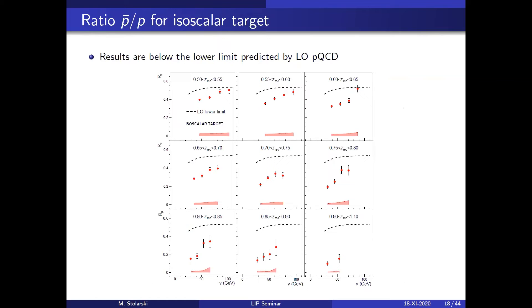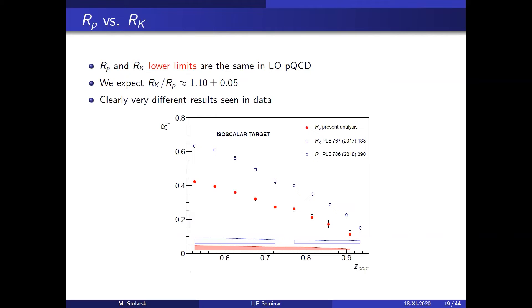For the proton results, we expected even more trouble. There is only a lower limit because there is no fragmentation function analog for the proton. The proton results are indeed all below the curve. In the kaon case we start measuring at W around 0.7 and there was still agreement with the leading order limit at higher W, but for the proton, even at z=0.5 you are already far below the limit — you definitely do not produce enough protons.